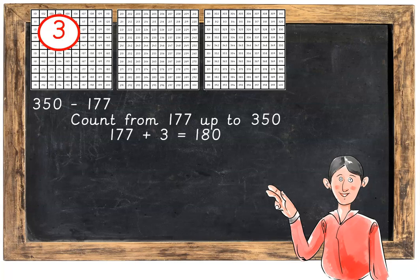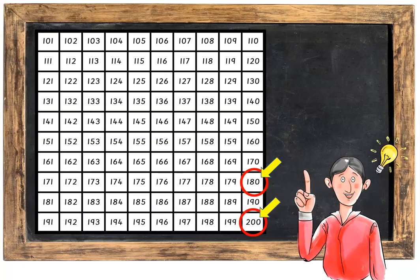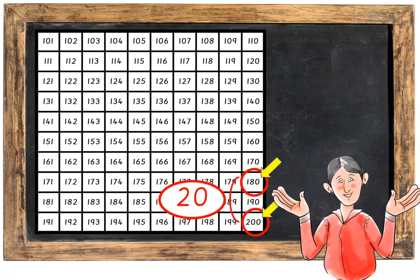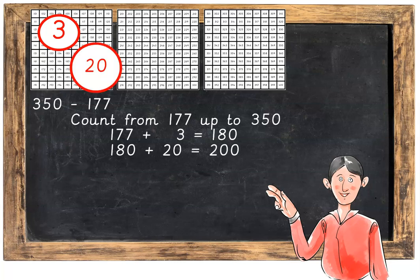Keep that number 3 in your head because we've jumped 3 so far. Now we're going to go from 180 up to the next easy number, which is 200. That's a jump of 10, 20. So 180 plus 20 equals 200.